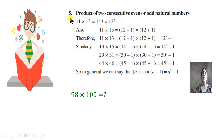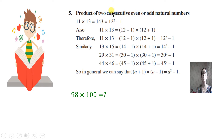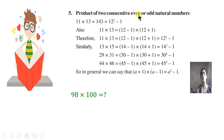Now the product of two consecutive even or odd natural numbers. First of all you should know what are even and odd numbers. Even numbers are 2, 4, 6, 8, 10 — they are all even numbers. Consecutive even numbers means the numbers next to each other, one after another. So 4 and 6 are consecutive even numbers, or 6 and 8 are consecutive even numbers. But 4 and 8 are not consecutive even numbers.